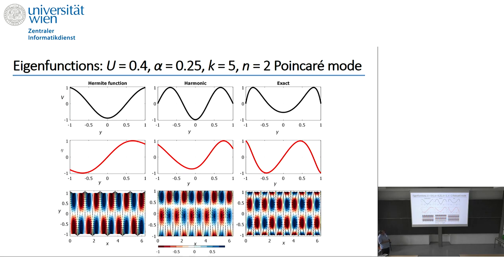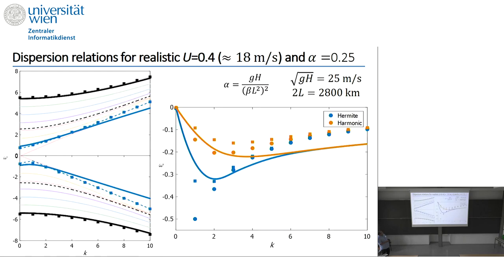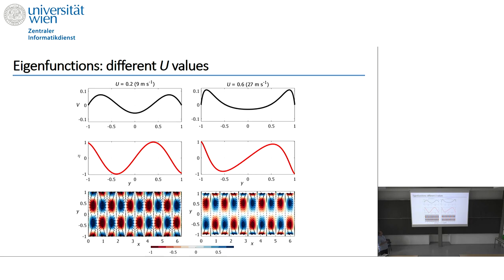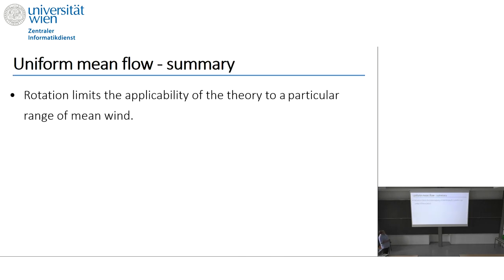Looking at the eigenfunctions for k equal to approximately 5 — the Hermite solution for v, eta, the contour of eta, and the velocity vectors — the exact solution for this case is neither harmonic nor Hermite. For weaker wind the eigenfunction is much more similar to the Hermite function, but as we increase the amplitude of the mean flow the eigenfunctions differ significantly from the classical solution.